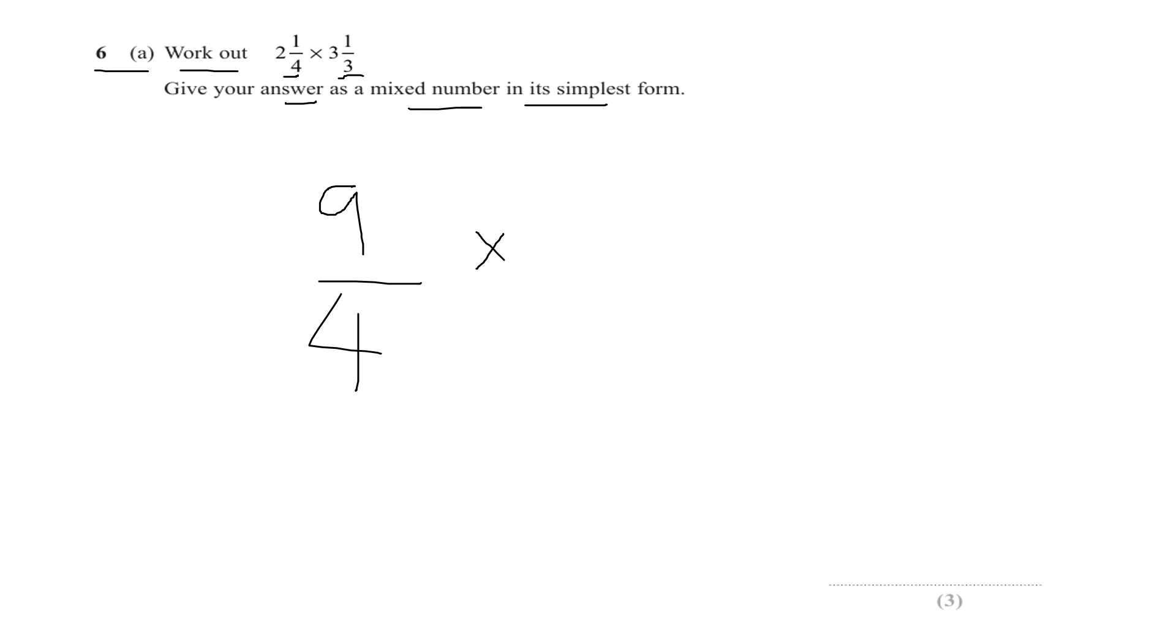Times by again, three times three is nine plus that one makes ten, so I get ten thirds. Now, top by top, bottom by bottom: nine times ten is ninety, four times three is twelve.